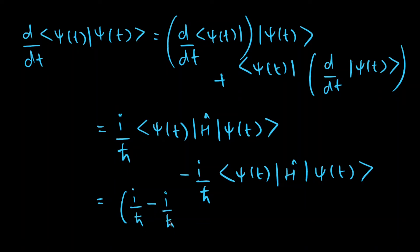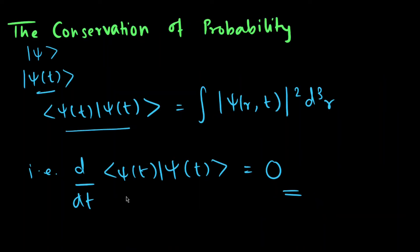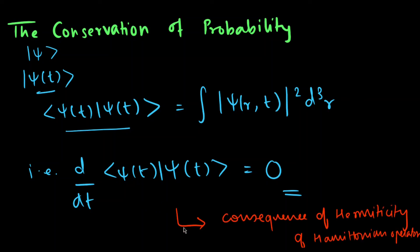Taking the expectation value of the Hamiltonian operator outside, we get (i/ℏ − i/ℏ) times ⟨ψ(t)|Ĥ|ψ(t)⟩, which is nothing but the expectation value of our Hamiltonian. As you can clearly see, this comes out to be zero, which implies that d/dt of the norm of ψ(t) equals zero. This means if ψ(t) is normalized, it stays normalized for all subsequent time. This result is a direct consequence of the Hermiticity of the Hamiltonian operator.